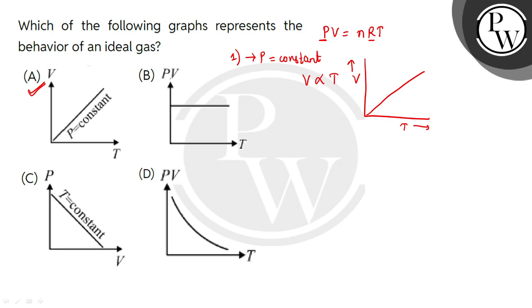If we graph PV versus T, PV equals nRT. This is our equation. If we take PV on the y-axis and T on the x-axis, this should not be constant. This equation shows it is not possible for PV to remain constant as T changes.